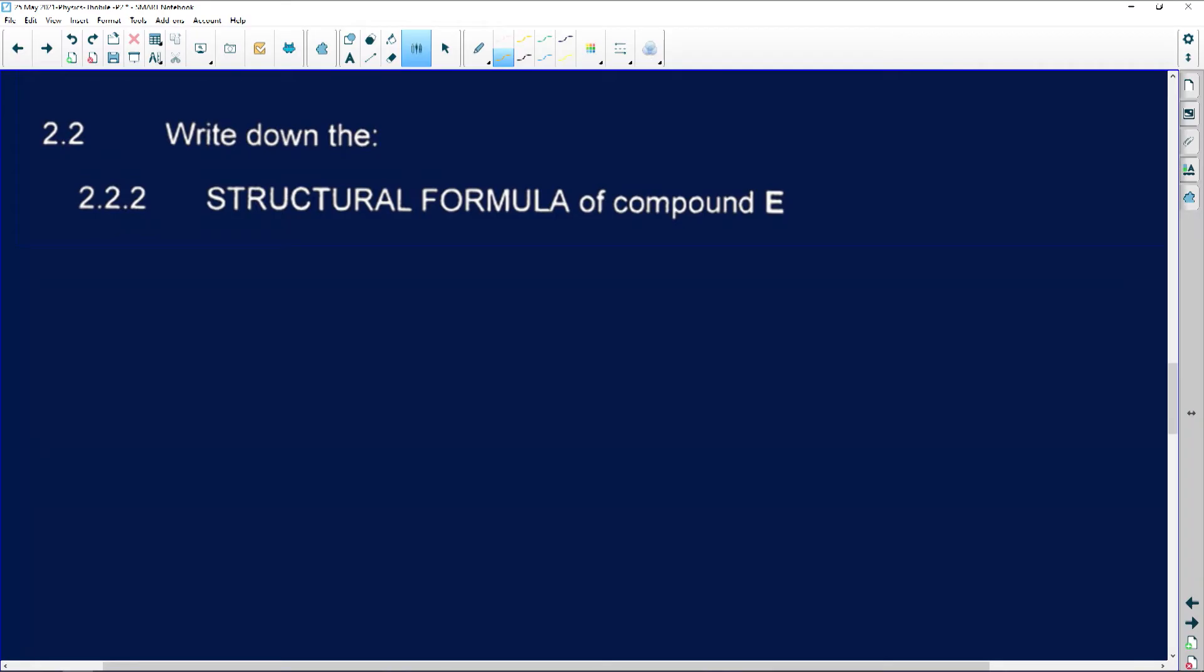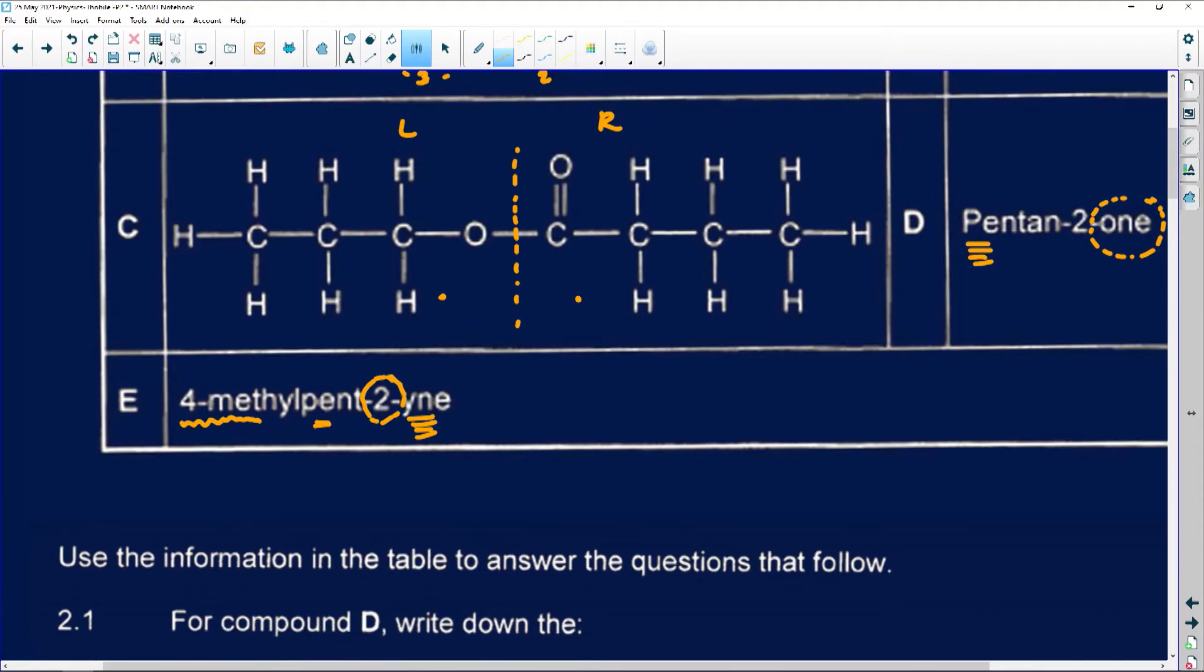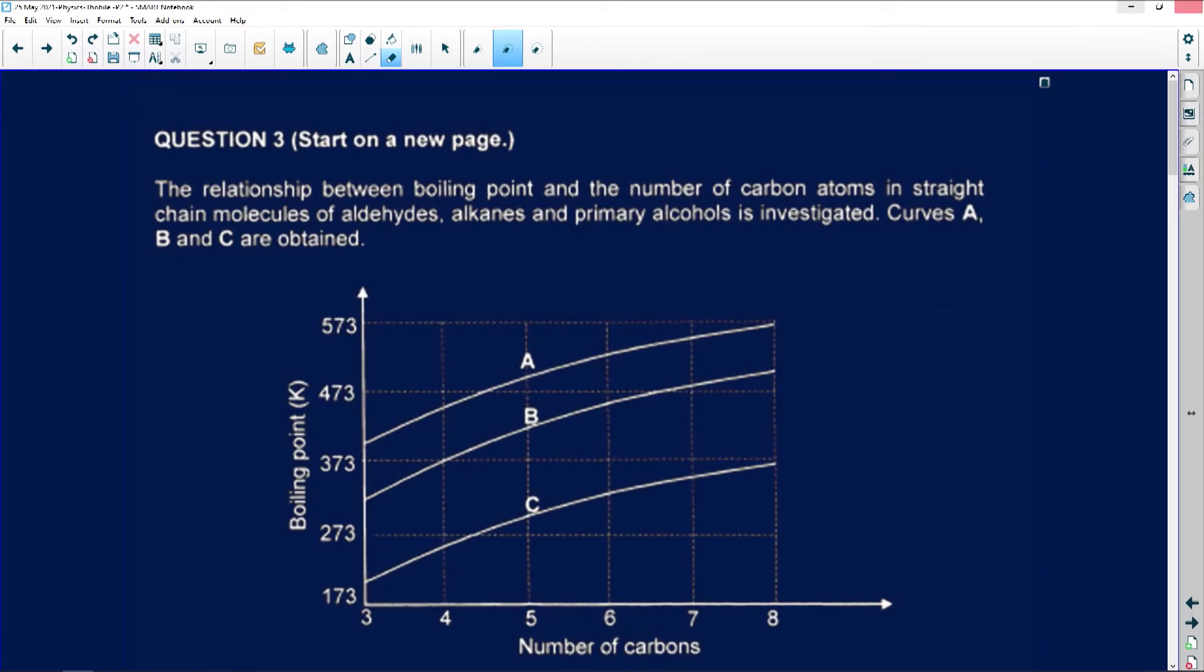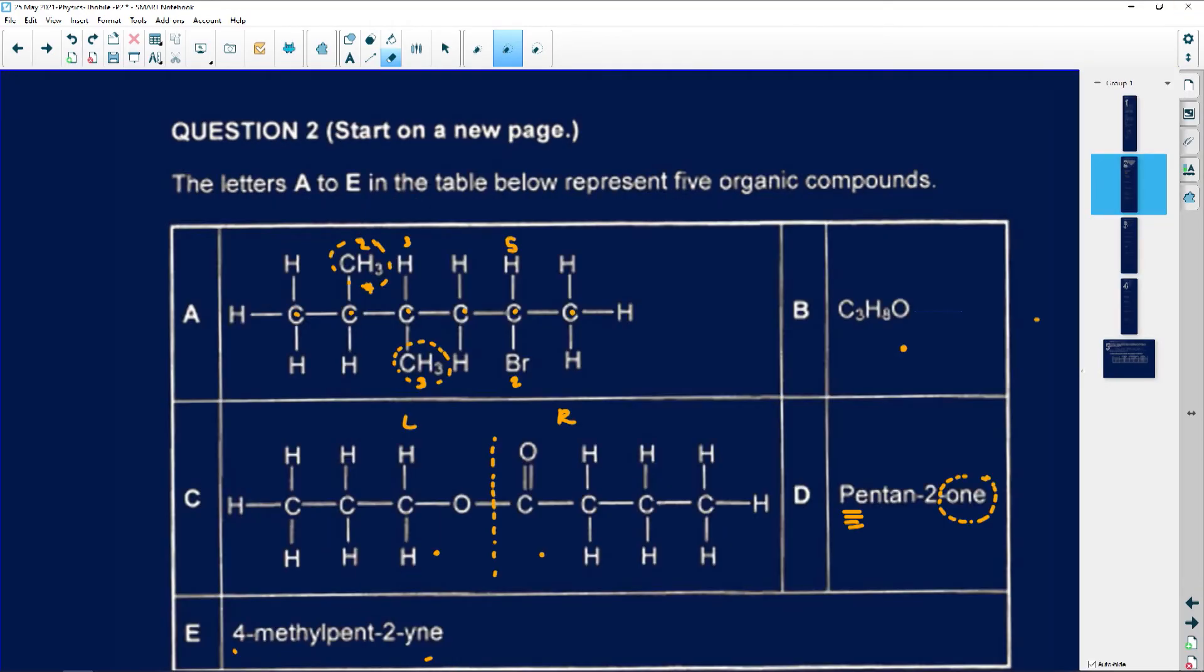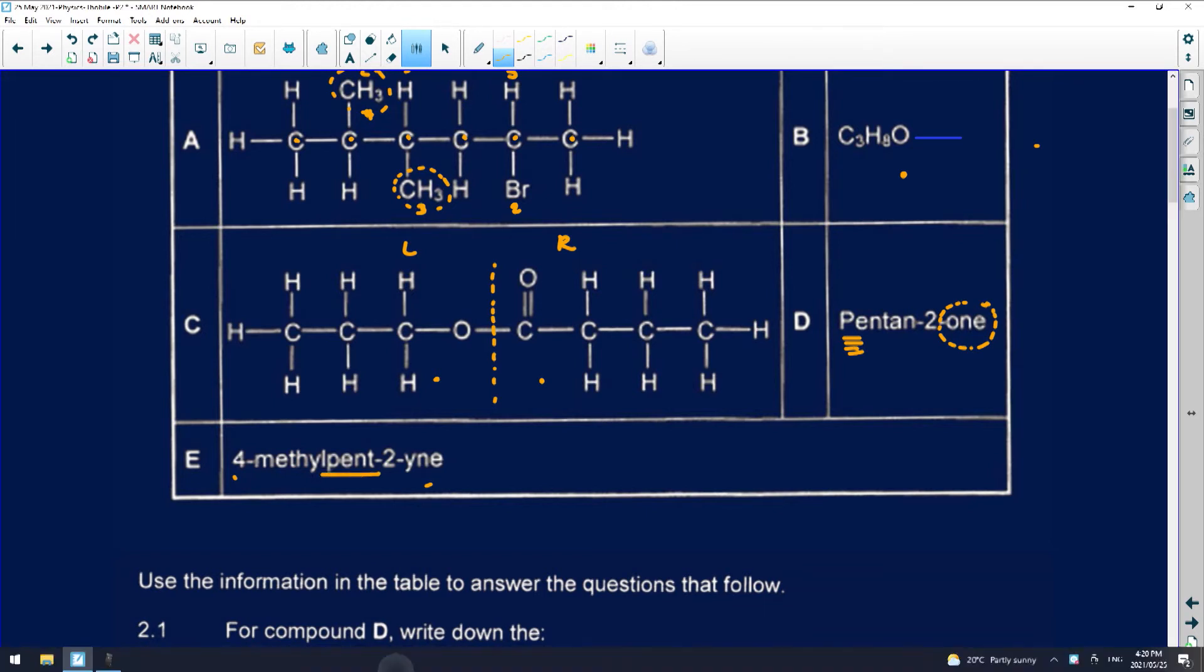Let's look at number two. We must draw the structural formula of number E. Let's see where number E is. Now, let's investigate this. If ever you're given the structural formula of something, always make sure that you first find your longest chain. My longest chain is pent. That means five. On the fourth carbon, I've got a branch of methyl. On the second carbon, I've got something also going there, which is a triple bond. This is a functional group of alkynes because it ends with Y-N-E.